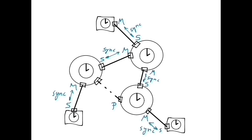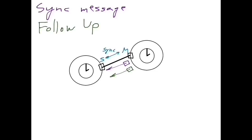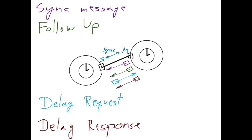Let's now dive into some more details by focusing on a single pair. In a network, synchronization will obviously be achieved through the exchange of messages. So what are the messages that a master port and a slave port exchange? First of all, the master periodically sends a so-called synchronization message. After a synchronization message, a master port usually sends a so-called follow-up message. The slave port that receives these two messages in turn responds with a delay request message, to which in turn the master port responds with a delay response message.